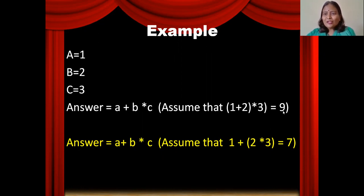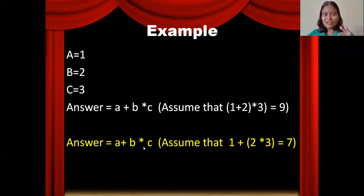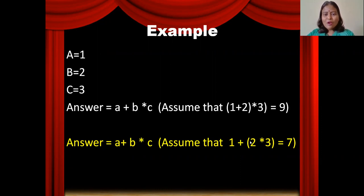Imagine there is one more way to calculate this expression. The expression is the same: A + B * C. Substitute A by 1, B by 2, C by 3. In the second method, you calculate the multiplication first: 2 * 3 = 6, then 6 + 1 = 7.